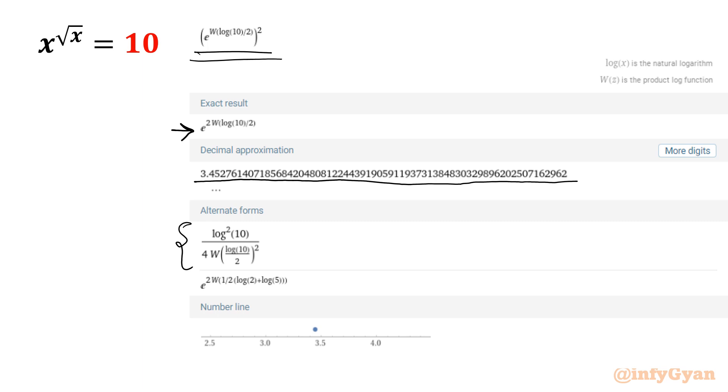And this is the alternate forms. Once we will take ln, then 2 squared will come out. Different forms are possible. And this is number line representation. This value is 3.452761407. Okay, this is how you can find out using Lambert W function, and how powerful the tool is.